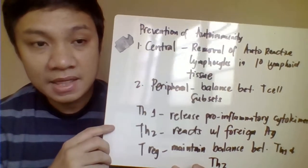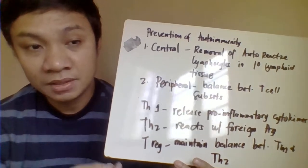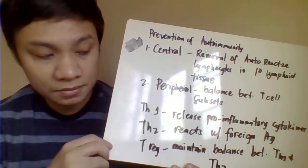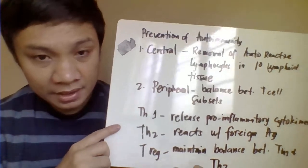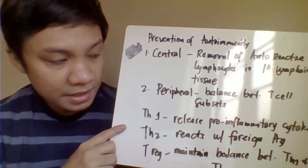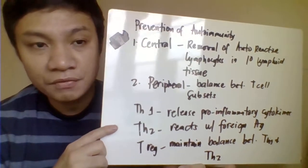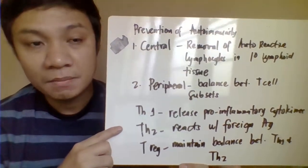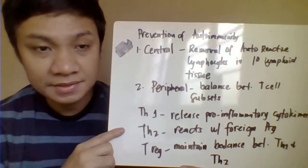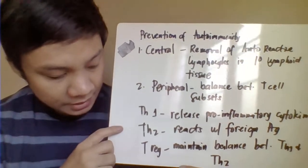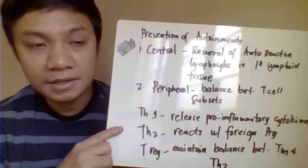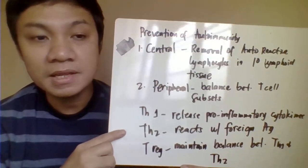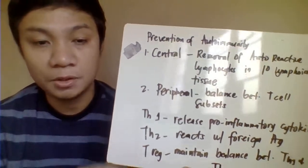The second mechanism is peripheral tolerance, which occurs in our peripheral circulation. This is primarily the function of your T cell subset populations. T helper 1 protects the body against autoimmunity by releasing pro-inflammatory cytokines, T helper 2 reacts to point antigens, and T regulatory cells regulate the balance between T helper 1 and T helper 2.